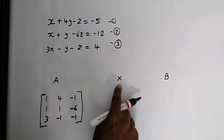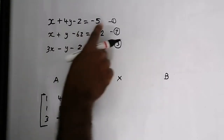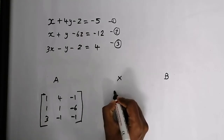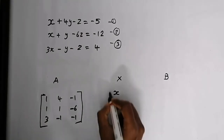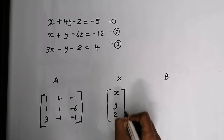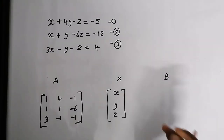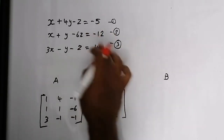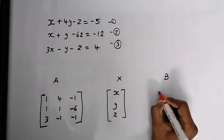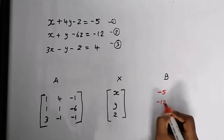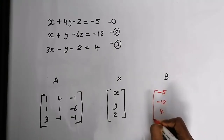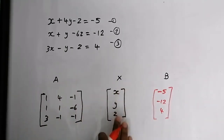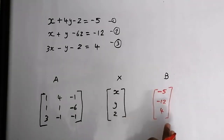Now we need to find the matrix of variables. In the equations we have three variables: x, y, and z. Now we need to write the matrix of constants — these are the values after the equal sign. The matrix of constants will be minus 5, minus 12, and 4. So we have formed three matrices: the matrix of coefficients, the matrix of variables, and the matrix of constants.